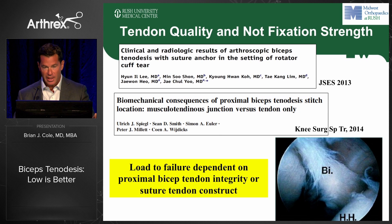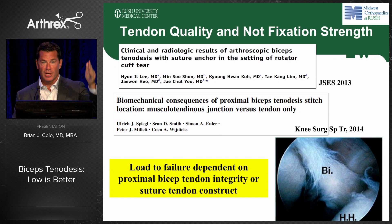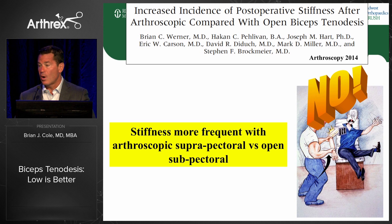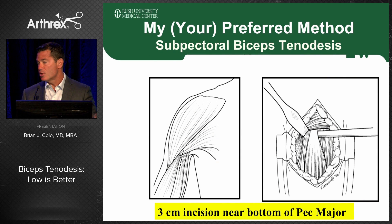Studies looking at distal migration of the biceps are often using sutures with just a single pass, and because the orientation of the collagen makes it easy to tear out, that's the weak point. There was an interesting study that looked at post-operative stiffness after arthroscopic versus open tenodesis, and stiffness was more frequent with those who had a supra-pectoral versus open procedure. I'm not certain why — maybe they're closer to the rotator interval, maybe it was a different patient group — but it's an interesting complication not seen with the sub-pectoral approach.